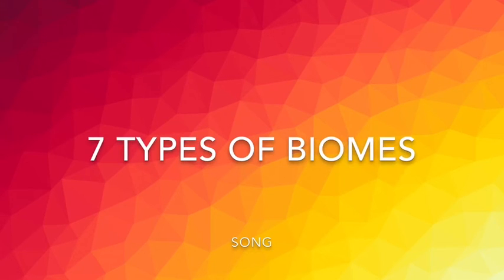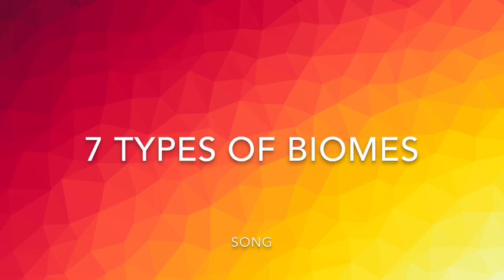Sing it with me. Grasslands, deserts, scrublands, tundra, deciduous forests, coniferous forests, tropical rainforests. 7 types of biomes.